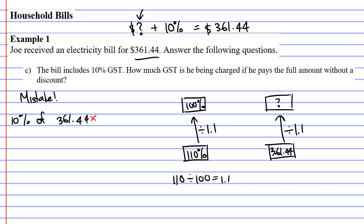$361.44 divided by 1.1 gives me $328.58 if I round it to the nearest cent. Now I've actually figured out the original amount.